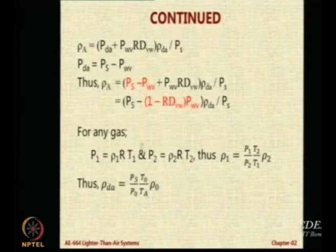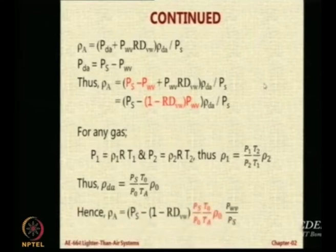Therefore, rho_DA will be equal to P_S by P_0, T_0 by T_A into rho_0. So now substitute this value. This expression on the top, this expression I want you to substitute rho_DA with P_S T_0 P_0 T_A rho_0 here. You will notice there is a P_S already in the denominator here; it will cancel out. And what will remain will be this term in the numerator divided by T_A.